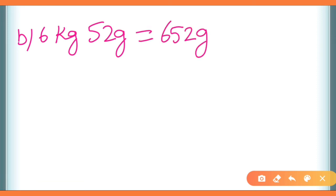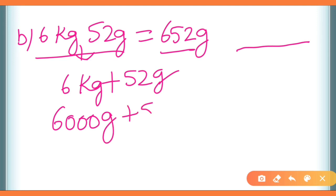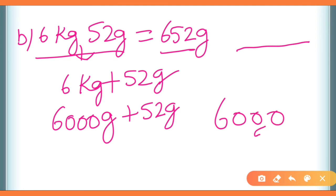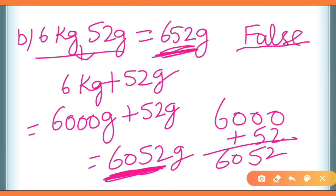Part B: 6 kilogram and 52 grams is equal to 652 grams? Solve करते हैं: 6 kilogram = 6,000 grams, plus 52 grams = 6,052 grams। लेकिन इन्होंने answer 652 लिखा है — जो गलत है। Actual answer 6,052 है, इसलिए answer: False।